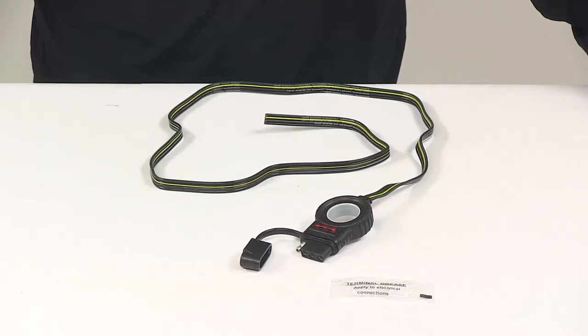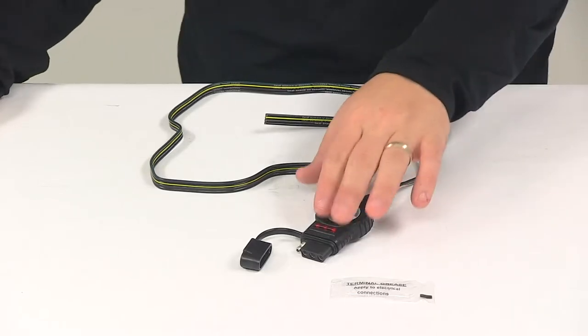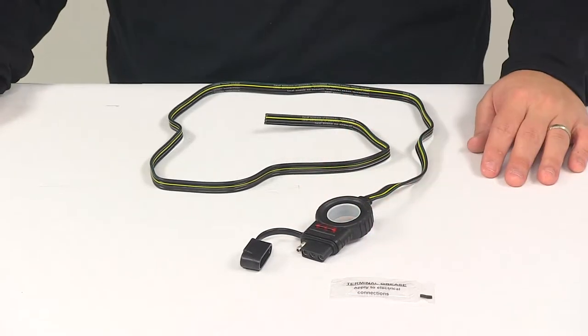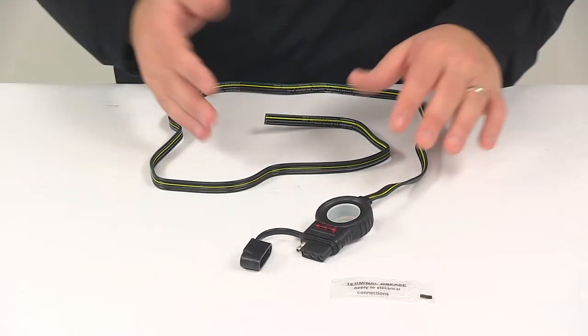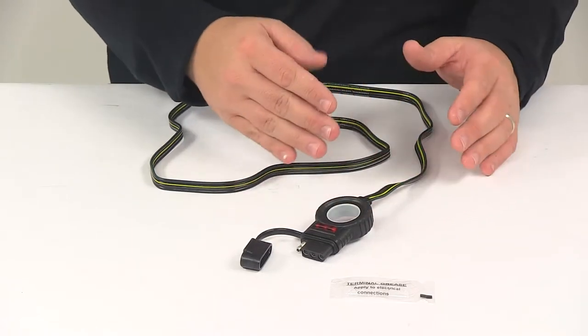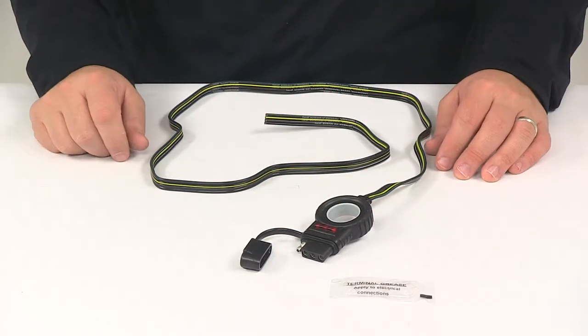Today we're going to be taking a look at the Hopkins Endurance Easy Pull Harness with a four-pole flat trailer connector. This four-way flat connector would be located at the back of your vehicle and is designed to power your trailer's signal lights.